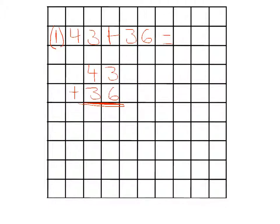That's a very important thing to do. Otherwise, a written algorithm won't work. And then we simply go 3 plus 6, which is 9. And 4 plus 3, which is 7. So the answer is 79.